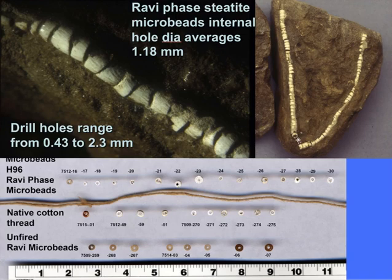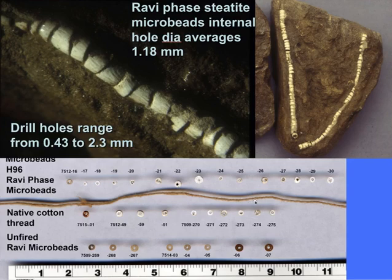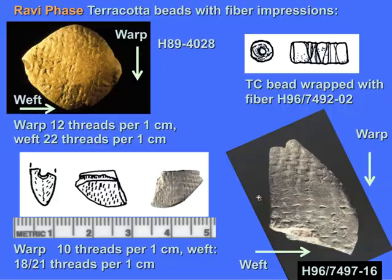We have lots of spindle whorls that come in two categories of weights — 16.6 grams and 28.4 grams — suggesting they were spinning different thicknesses of fiber. We also have microbeads made of tiny pieces of steatite, a soapstone that's been ground, shaped, and fired, with very tiny holes just barely big enough to hold a hand-spun cotton fiber. Later beads are much finer and would have required silk. We have beads with fiber impressions — possibly wool or cotton — clearly evidencing weaving at this time period.